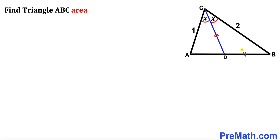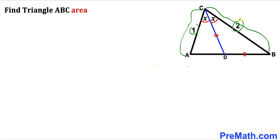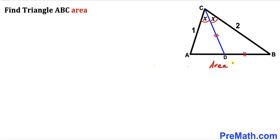Welcome to pre-math. In this video we have got triangle ABC along with angle bisector CD, such that angle ACD equals angle BCD and both angles are represented by x degrees. This side length AC is 1 unit, side length BC is 2 units, and segment CD is equal to segment BD. Our task is to calculate the area of triangle ABC.